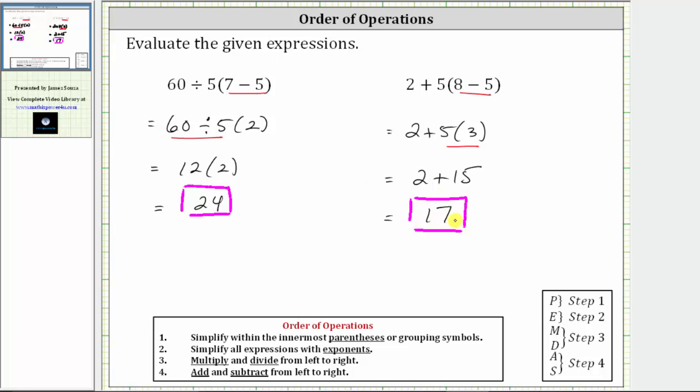One last thing I do want to mention is if you're used to using the saying, please excuse my dear Aunt Sally, or the word PEMDAS, to remember the steps in the order of operations, you do need to be careful because there are not six steps. There are only four steps in the order of operations.